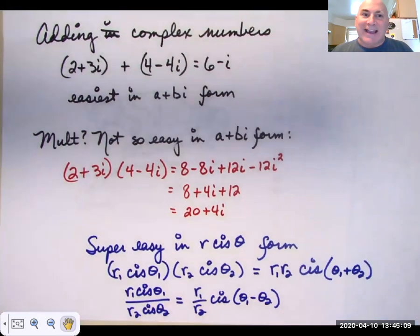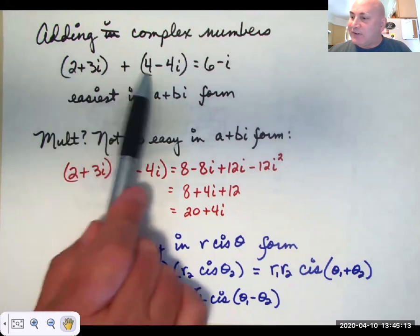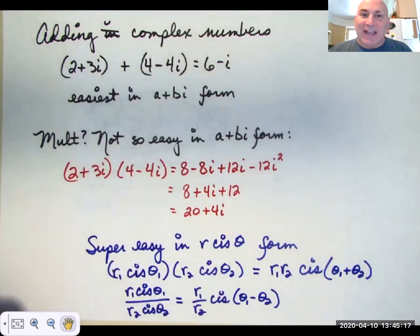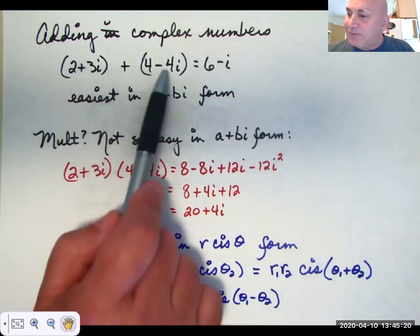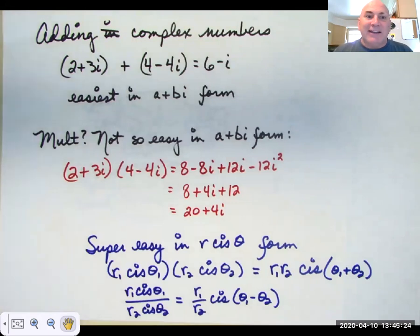Now, when we add complex numbers, we add their real parts together. Two plus four is six. We add their imaginary parts together. Three plus negative four is negative one. And then, of course, the I. And adding and subtracting complex numbers is very easy in A plus B I, or rectangular form.